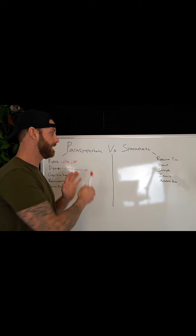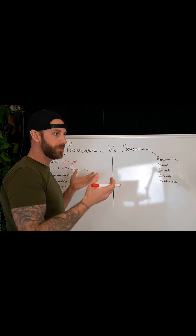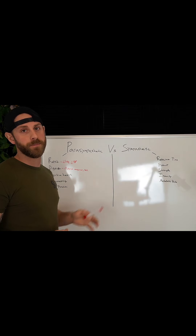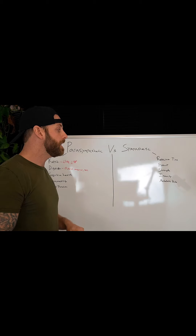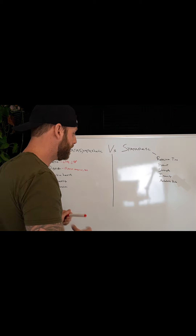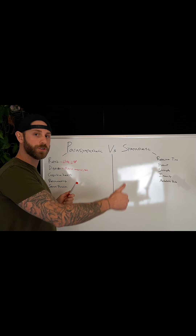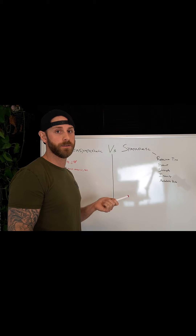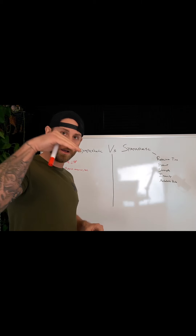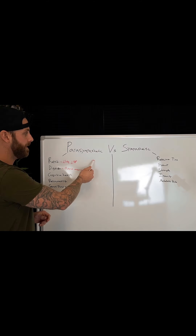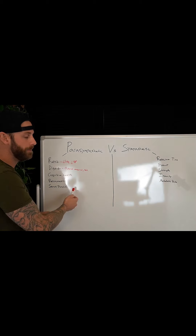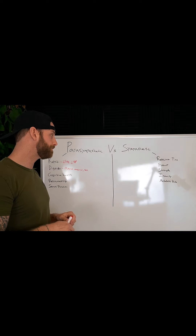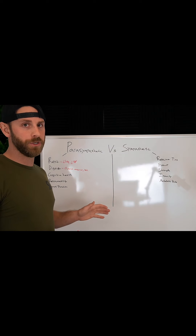In a healthy balance, you want roughly a 50/50 state. Your sympathetic nervous system drive is based on responding to stressors as well as your circadian rhythm. In the morning, cortisol rises, driving the sympathetic state. As the day goes on and cortisol drops, you activate more of your parasympathetic nervous system — that's when GABA is released, slowing you down and preparing you for sleep.